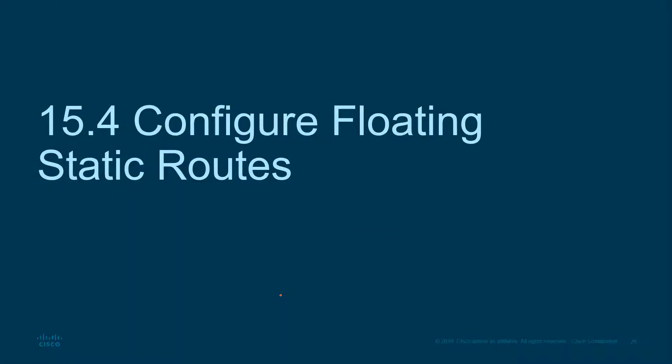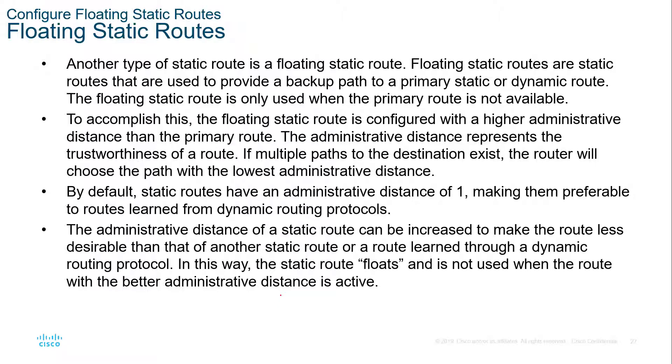So how do we configure floating static routes? If we have two ISPs, how do we ensure that ISP1 stays active? When ISP1 goes inactive, we can have ISP2 come active. That way we always have a path leaving — we have a backup internet connection and the routes should automatically update. These are what we do with floating static routes. We assign different weights on them so we can have one route with one weight and one route with another. If the primary route goes down, the secondary route can take over.